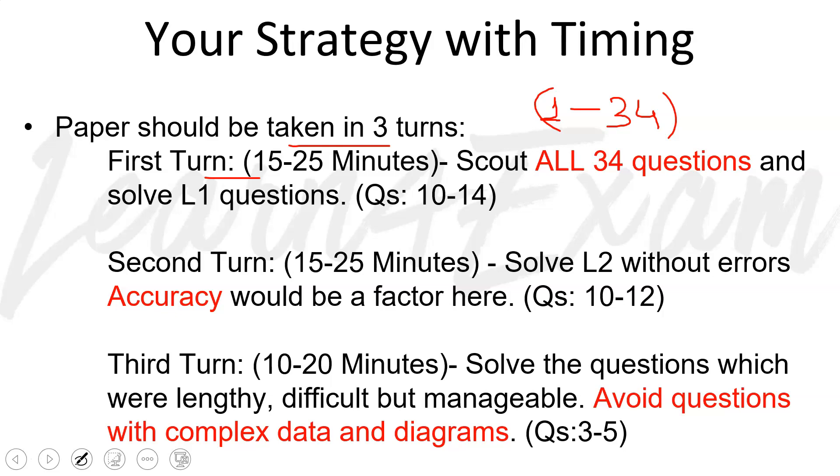So in the first 15 to 25 minutes you would do what? You would scout all 34 questions. Question 1, if it's lengthy, immediately leave it, do not waste more than 5 seconds. If it's a question of more than 4 lines, leave that question out. Go to question 2, if it seems easy, do it, if not, skip. Go to question 3, if easy do it, if not skip. So you need to learn the art of leaving. The better you do this, the better you'll be able to place your attempts. So in the first 15 to 25 minutes according to the level of questions you should solve around 10 to 14 questions, and these 10 to 14 questions would be there in the paper which are the most easiest and you should attempt all of these.